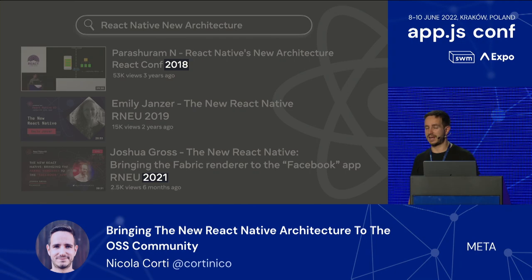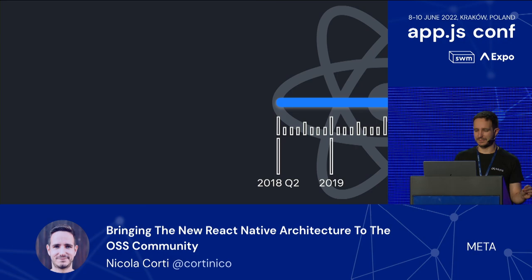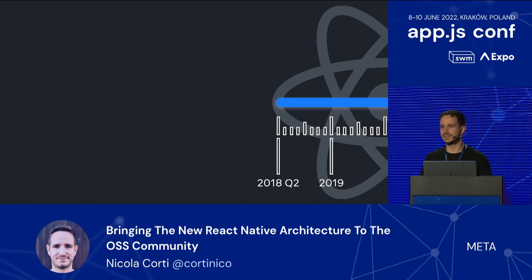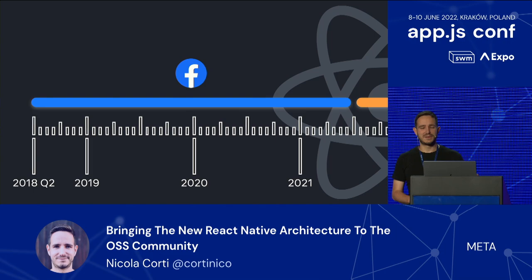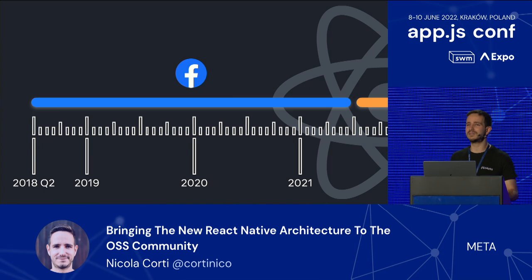You can see how long it took for us to fully understand the scope of the new architecture and roll it out to the Facebook app. I want to start from this last talk that Joshua gave last year. In that talk, he showed us a timeline that started in Q2 2018, when the React Native team started to consider this major rewrite of the core of React Native. It turns out that the Facebook app is quite complicated — it has more than 1,000 surfaces that are using React Native.